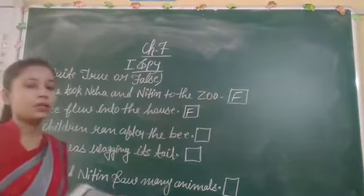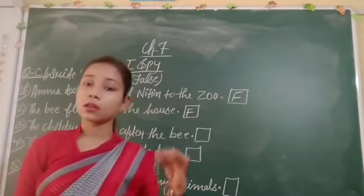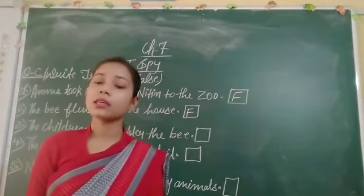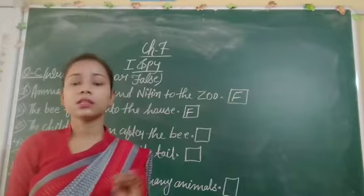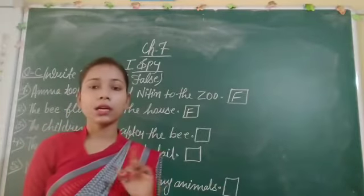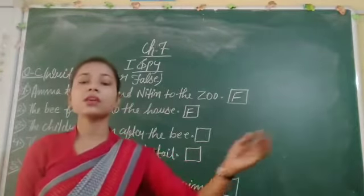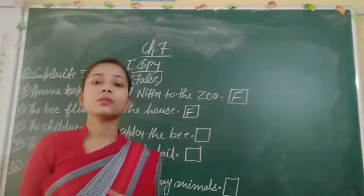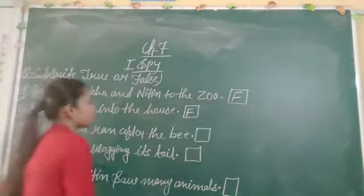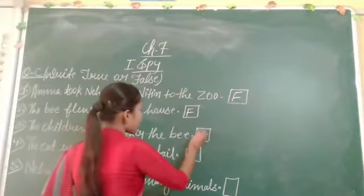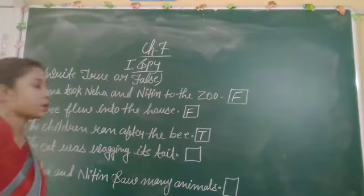The children ran after the bee. Yes, it is true. When Neha and Nithin saw the bee inside the house, and the bee flew out into the garden, Neha and Nithin ran after it. It is a true statement, so we put T in front of this sentence.